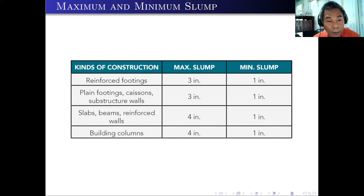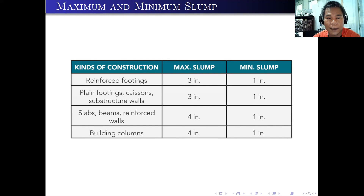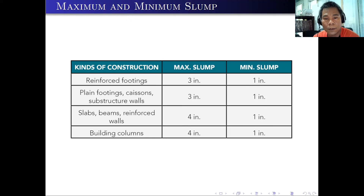Normally we have maximum and minimum slump values for different kinds of construction. For reinforced footings, the minimum slump should be 1 inch with a maximum of 3 inches — that's 25 mm to 75 mm — which is the same as plain footings, caissons, and substructure walls. But for slabs, beams, reinforced walls, and building columns, the minimum slump is also 1 inch or 25 mm, but we can go as high as 4 inches or 100 mm. It's very important that your concrete mix is workable, especially when pouring in a beam or column where space is very limited. You can reduce your water-cement ratio and add a superplasticizer admixture so that the workability will increase.